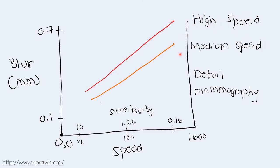Screens with large visibility of detail which means that we have a low blur have the lowest absorption efficiency or sensitivity shown here and required higher exposure.